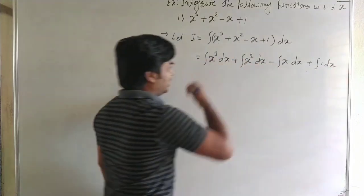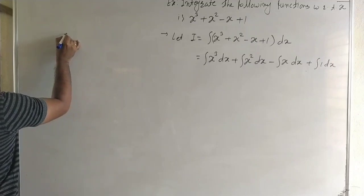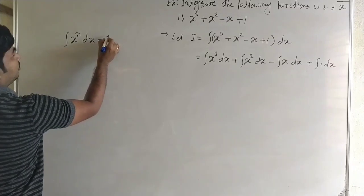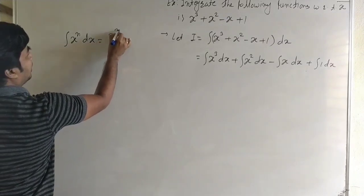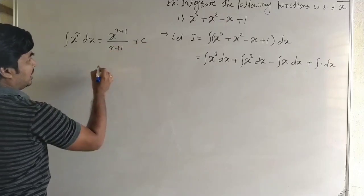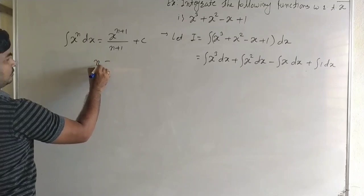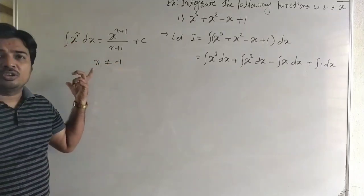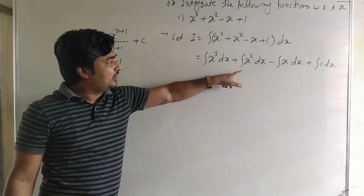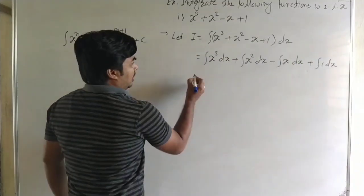We write: integration of x³ dx + integration of x² dx − integration of x dx + integration of 1 dx. It is a polynomial function, and we use the standard formula: integration of xⁿ dx = xⁿ⁺¹ / (n+1) + C, where n ≠ −1.